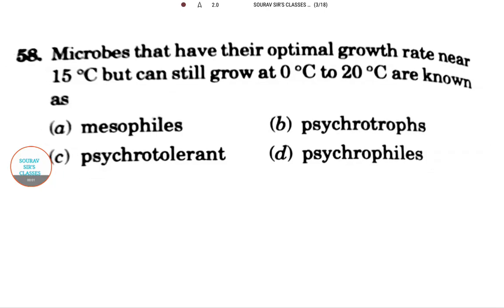Hello students, welcome to Showup Sir Classes. Today's question asks about microbes that have their optimal growth rate near 15°C but can still grow at 0°C to 20°C. Which of the following is the correct answer? I think option D.